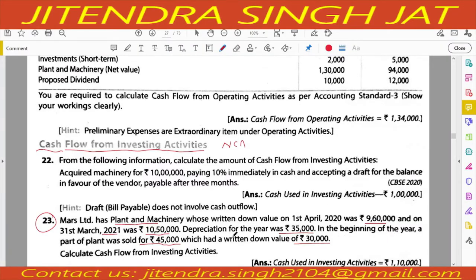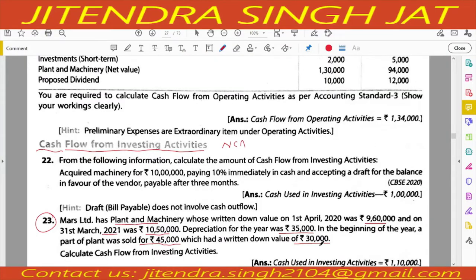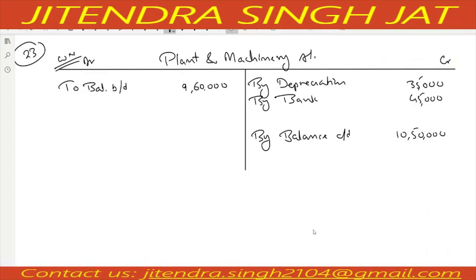In the beginning of the year, part of plant was sold for 45,000. By bank: 45,000. The written down value was 30,000, so the plant is sold at a profit of 15,000 — that is, 45 minus 30 equals 15,000. The profit comes on the debit side: to statement of profit and loss, gain on sale: 15,000.